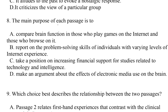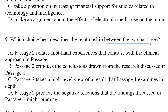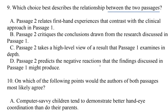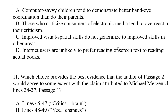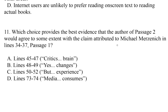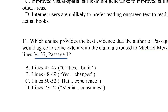Now moving on to question eight: 'The main purpose of each passage' — so this one's about both passages. A question like this I will do at the very end. Question nine: 'Which choice best describes the relationship between the two passages?' Another both-passage question. Question ten: 'On which of the following points would the authors of both passages most likely agree?' Another one I would do last. Question eleven: 'Which choice provides the best evidence that the author of passage two would agree to some extent with the claim attributed to Michael Merzenich in lines 34 to 37 in passage one?' So this compares both passages.